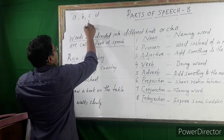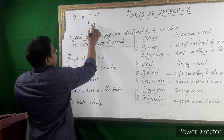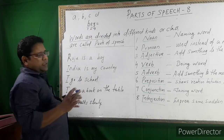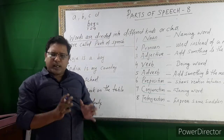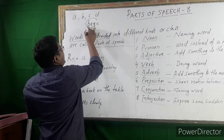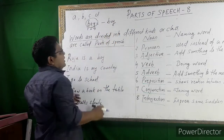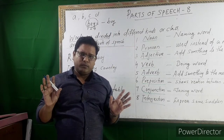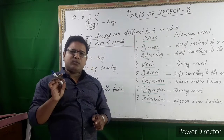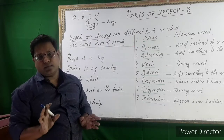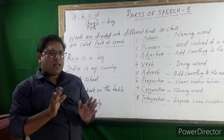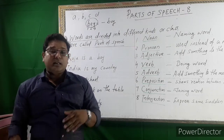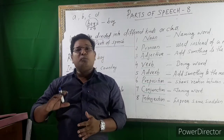For example, the word 'boy' — B, O, Y — three letters: letter one, letter two, letter three. These three letters together are called a word. Then, what is a sentence? A sentence is a group of words.